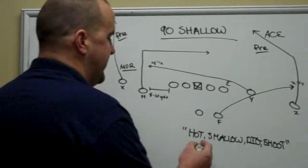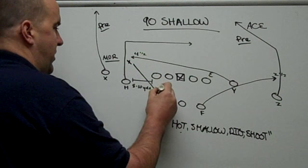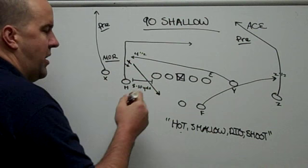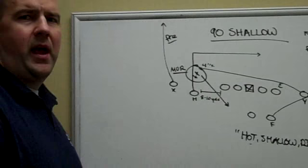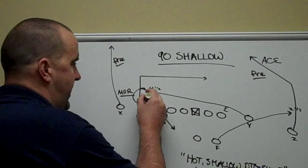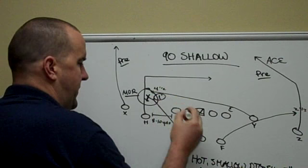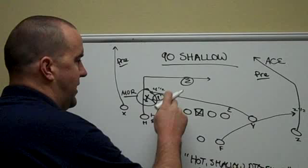What is 'hot'? Hot is when we have a defender — we'll mark him here — who appears to be covering the H and then comes on a blitz. H needs to recognize that and pull up right away, and the quarterback is going to throw the football to H immediately. The quarterback's eyes are always going to be on that alley defender, or 'tough defender' as some call it. If that defender stays in place, that takes out the shallow route, so the quarterback moves his progression to the dig. If the dig is covered, he then goes to the shoot.